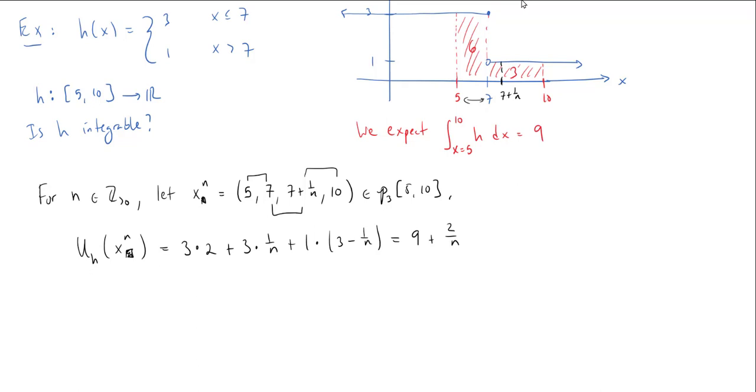The upper sum for this particular partition is given by 9 + 2/n, and we see pretty easily as n gets large, this is going to converge to 9. So we'll just keep that in the back of our minds.